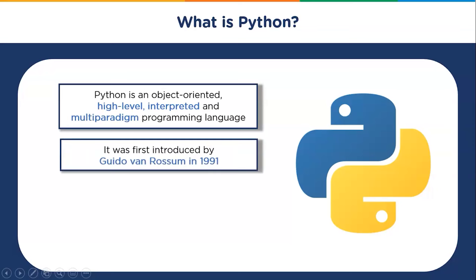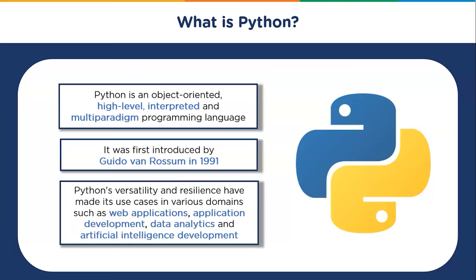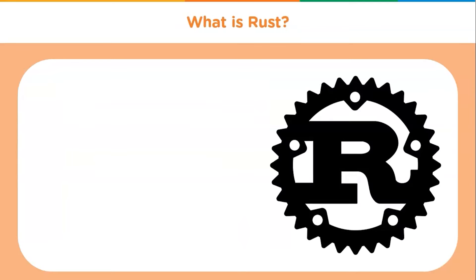Python was first introduced by Guido van Rossum in 1991. With highly readable code and a smart syntax, Python is perfect for those that are just starting their programming career. Python's versatility and resilience have made its use cases span various domains such as web applications, application development, data analytics, and artificial intelligence development.